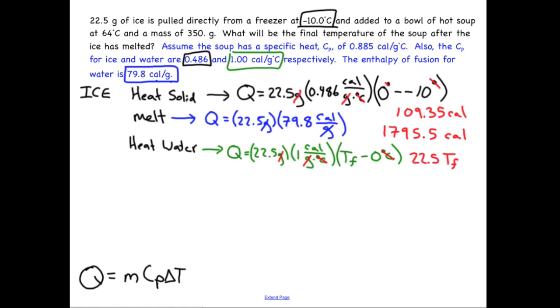And as I said before, you can just add all of these different energies together, and that's the total energy associated with the ice. So I'm going to write that in the corner so that I can reclaim the middle of the board space. But adding this 109 number to that almost 1800 number gives me 1904.85. I will do some rounding a little later on. And then 22.5 T final. I'm just tucking that into the corner for now. And we're going to move on to the soup.